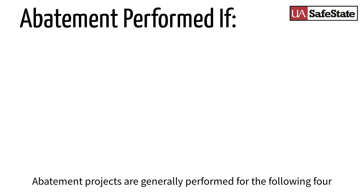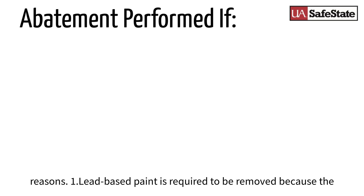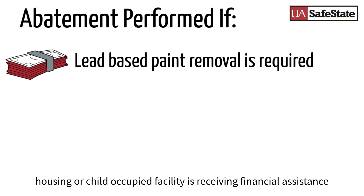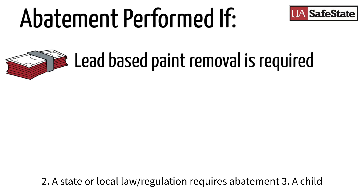Abatement projects are generally performed for the following four reasons. One: lead-based paint is required to be removed because the housing or child-occupied facility is receiving financial assistance. Two: a state or local law or regulation requires abatement.